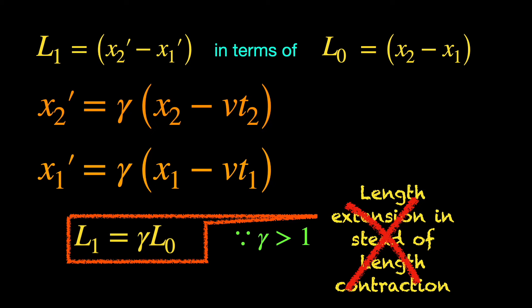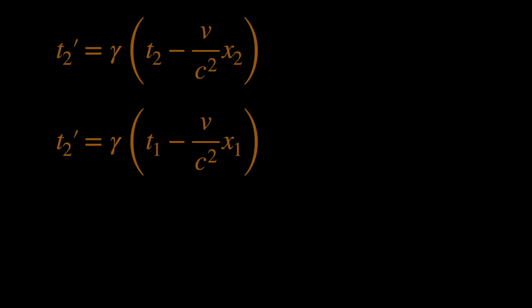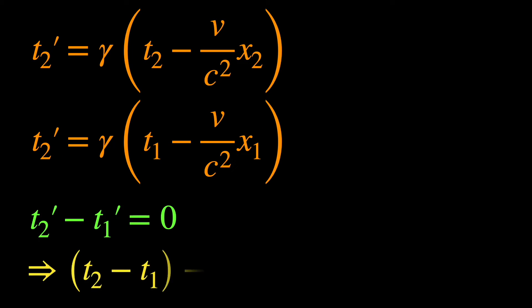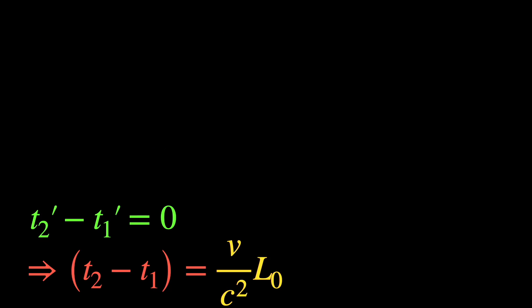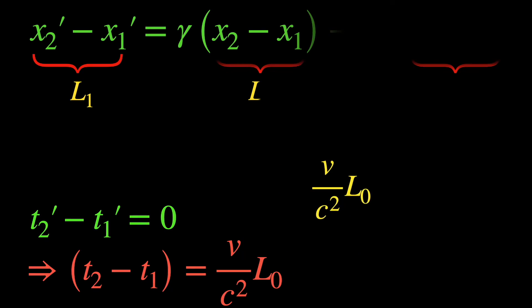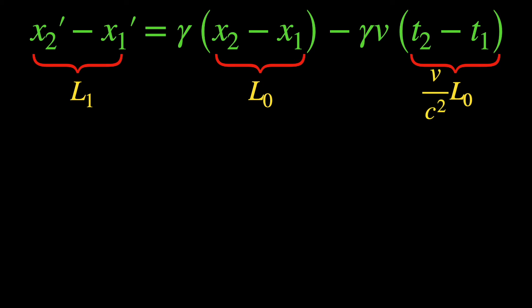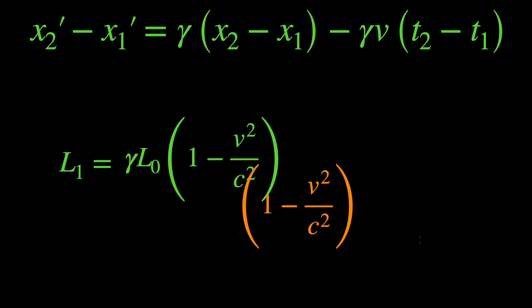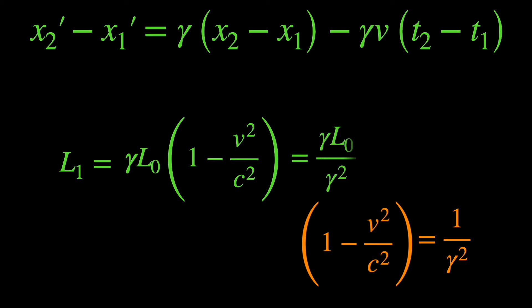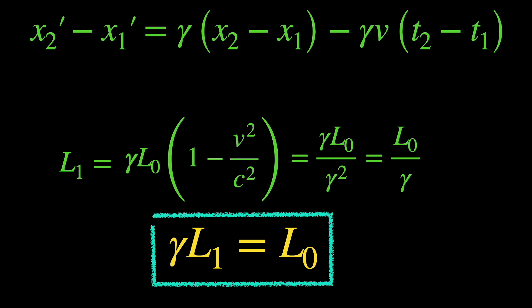So be careful not to impose t2 minus t1 equals 0 here. We should rather impose the simultaneity condition of the S1 frame, that is t2' minus t1' equals 0. What does it do? Once we use the Lorentz transformation equations for t2' and t1', this condition tells us the value of t2 minus t1 in terms of x2 minus x1, or L0. Using this back into the expression for L1, we have it totally in terms of L0. After a little window dressing and noting that the factor in the parenthesis is inverse of gamma squared, this equation now correctly represents the Lorentz contraction or length contraction effect.